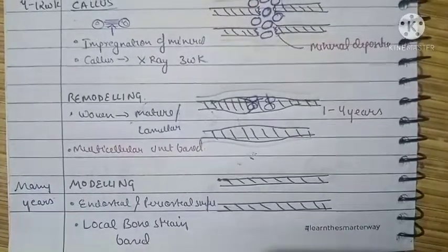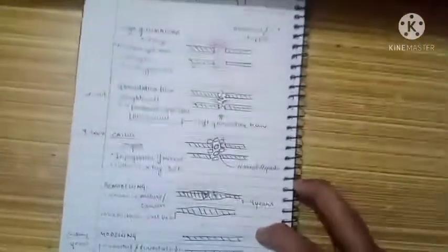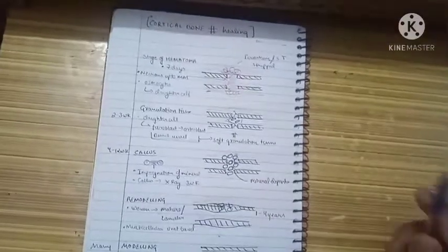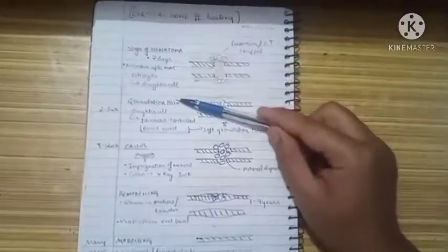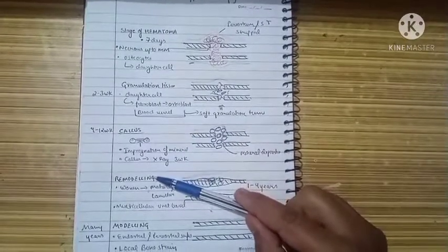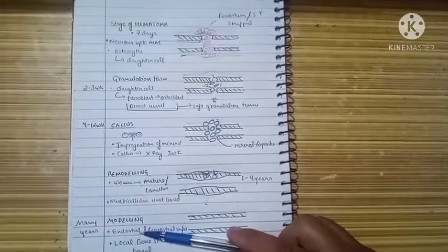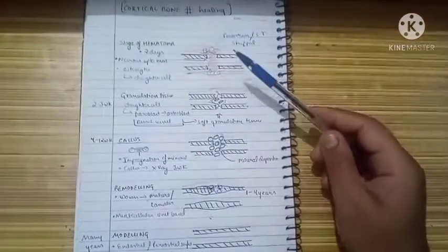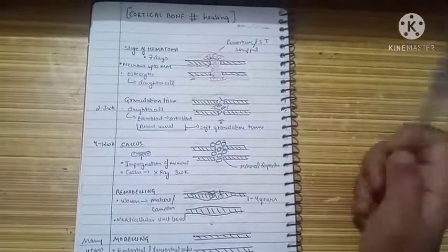This leads to sharpening of the endosteum and periosteum into normal bone. These were the five stages: stage of hematoma, granulation tissue, callus formation, remodeling (earlier known as consolidation), and modeling (earlier known as remodeling). Hope you understood this topic, thanks for watching.